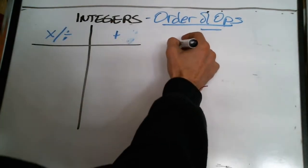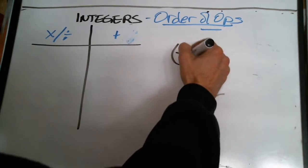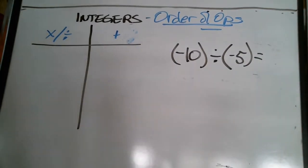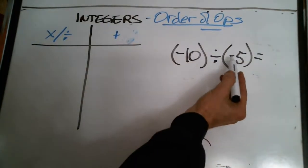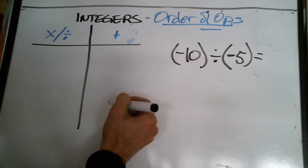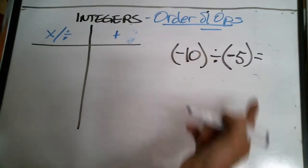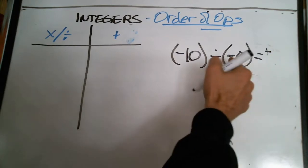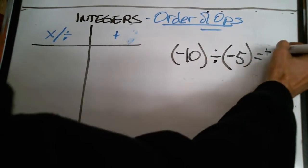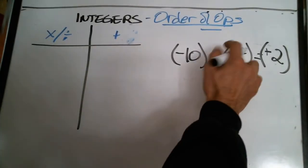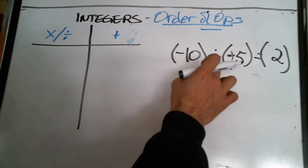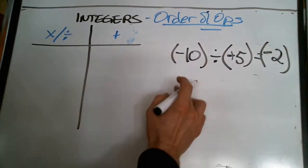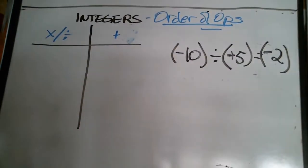If I have negative 10 divided by negative 5, the rules for division are the same as multiplication. Are these signs the same or different? A negative and a negative — they're the same. Same sign, they combine to make a positive, double negative, so that's going to be positive: 10 divided by 5 is just 2. If this was positive 10 divided by positive 5, well now these are different signs — they're going to end up as negative. Hide the signs and do them out: 10 divided by 5 is 2.